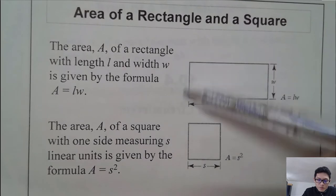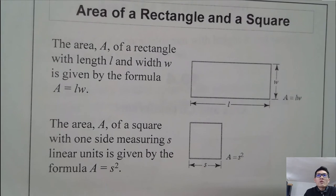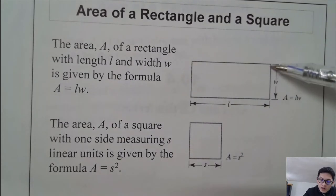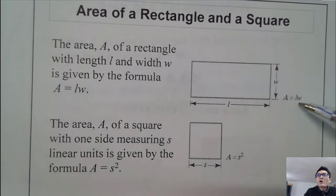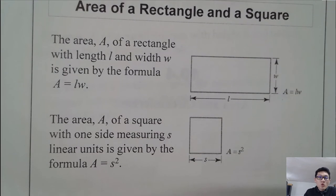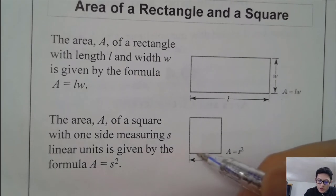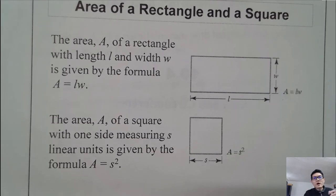Let's look at the area of a rectangle and a square — well-known formulas from high school or middle school. For a rectangle with length L and width W, the area is L times W. For a square with side length S, all four sides are equal, so the area is S times S, or S squared.